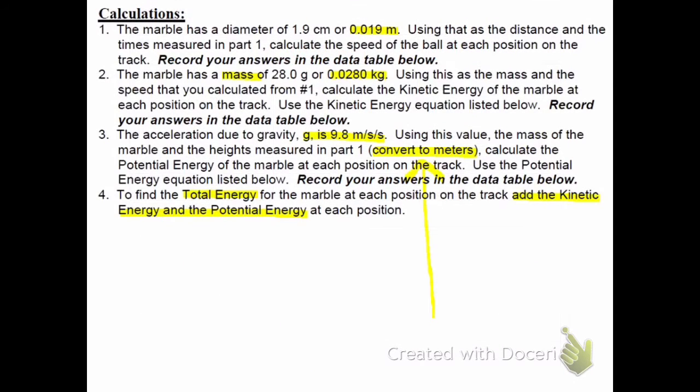A couple reminders as we do these calculations. The diameter of the marble is 1.9 centimeters. So we're going to do all of our calculations in meters per second. That's why we're going to use 0.019 meters as the distance traveled. Also, we massed the marble. It's 28 grams, but we want kilograms. So we're going to use 0.0280 kilograms. Acceleration due to gravity is 9.8. And when we measure the height of the track, we're going to convert that measurement to meters.